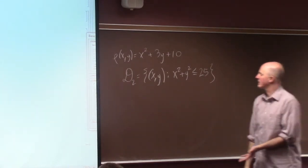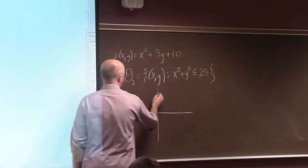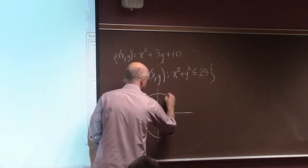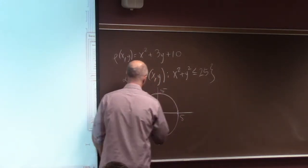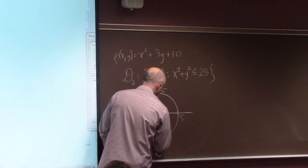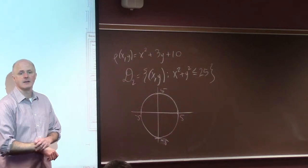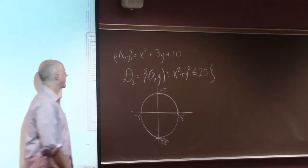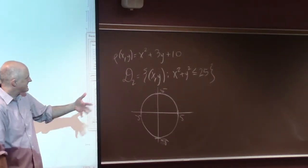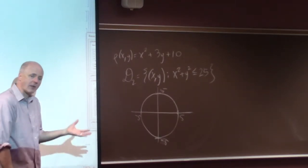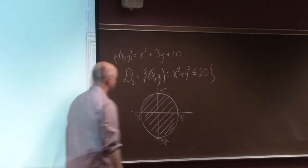When you draw a domain, you're implicitly assuming a coordinate system — typically rectangular coordinates. I'll also describe this domain in polar coordinates, and though the symbolic description is different, the way you draw the picture is exactly the same: a disk of radius 5 centered at the origin.